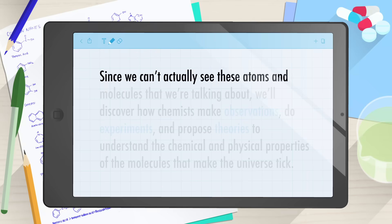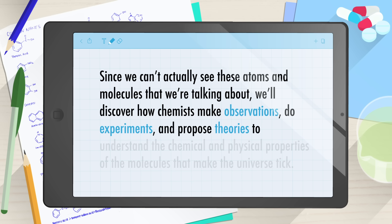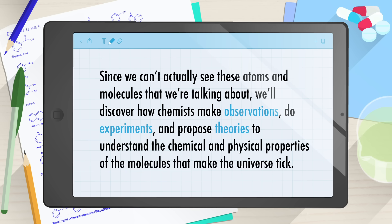Since we can't actually see these atoms and molecules that we're talking about, we'll discover how chemists make observations, do experiments, and propose theories to understand the chemical and physical properties of the molecules that make the universe tick. Once we have a basic toolbox, we'll start building molecules, from small molecules like ethanol to giant macromolecules like high-density polyethylene — the plastic in milk jugs and soda bottles. We'll look into the logic behind elimination reactions, substitution reactions, pericyclic reactions, and more.